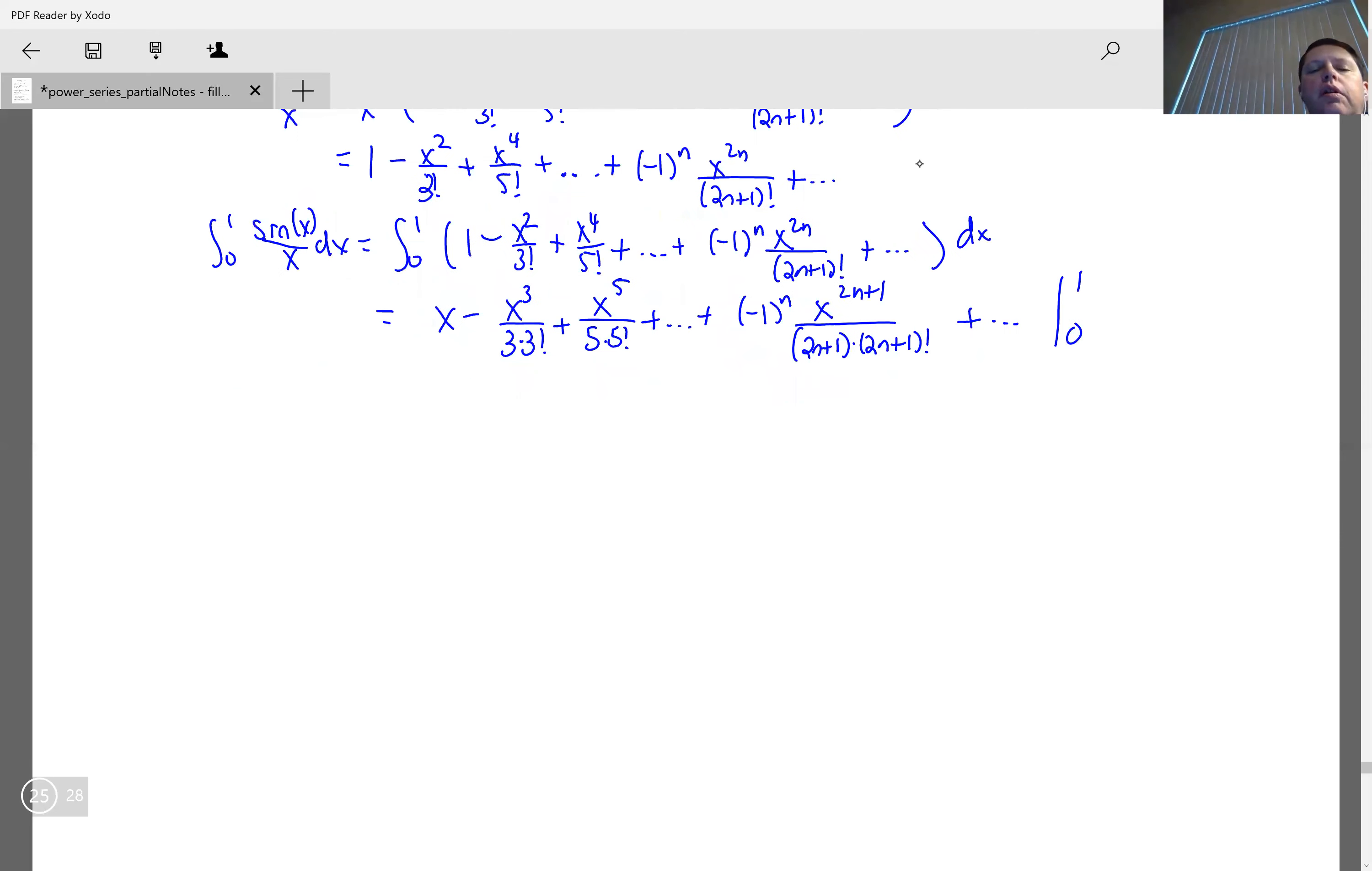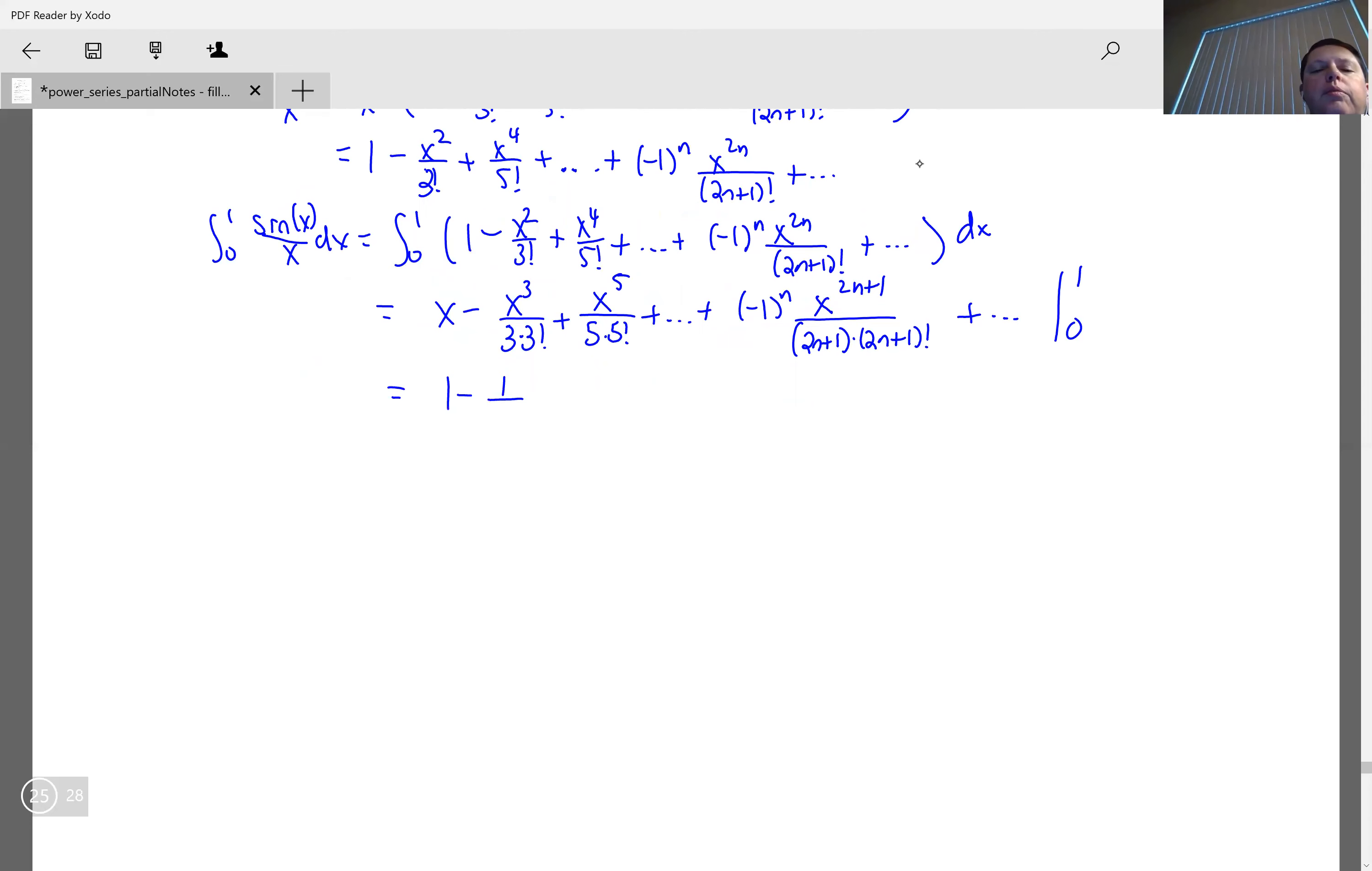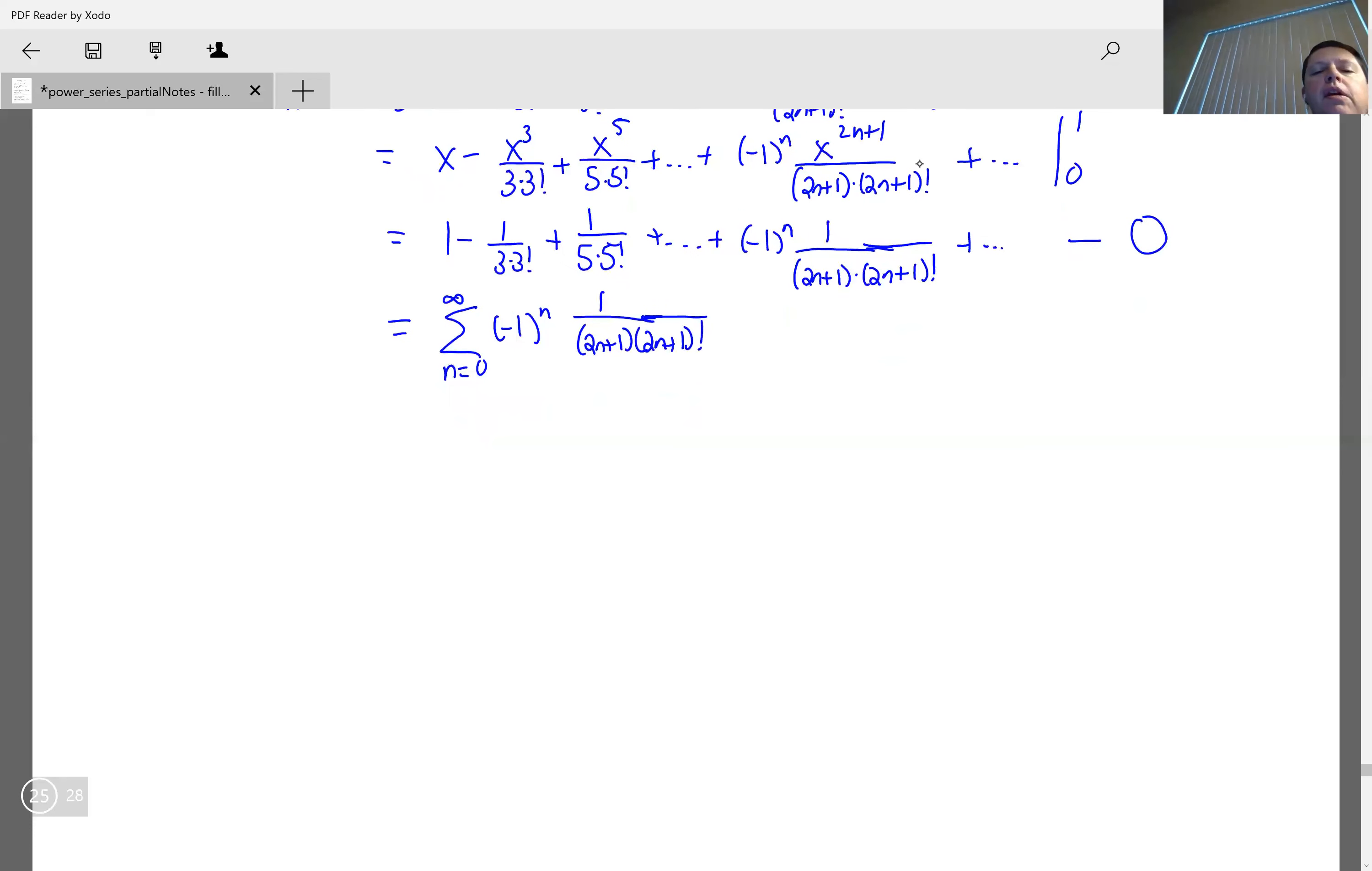And we evaluate at the limits, so we get 1 minus 1 over 3 times 3 factorial plus 1 over 5 times 5 factorial, and 1 over 2n over 2n plus 1 factorial. This continues forever, and then when we plug in 0 we get 0. And we can write this as the summation going from 0 to infinity of negative 1 to the n times 1 over 2n plus 1 times 2n plus 1 factorial. The nice convenient thing about having that general term there is we just get to write the series right away.